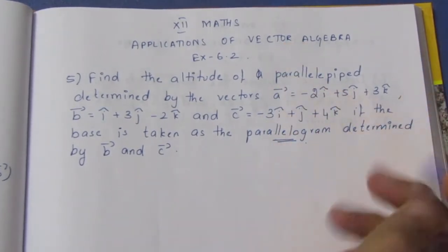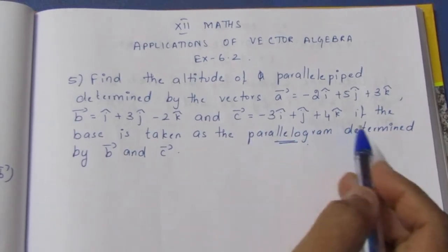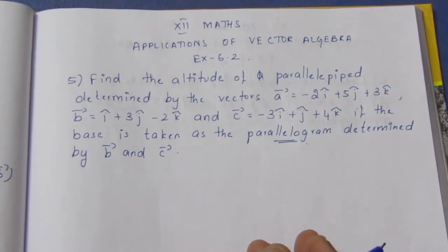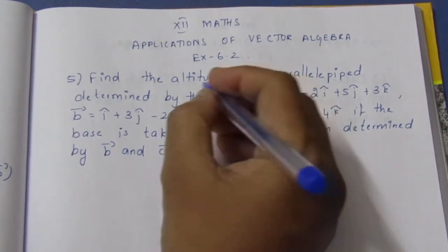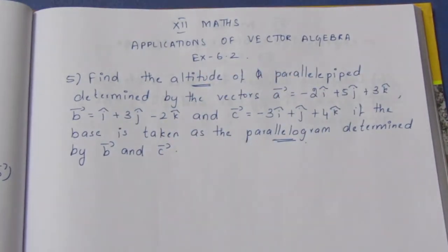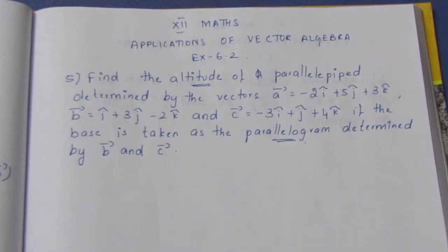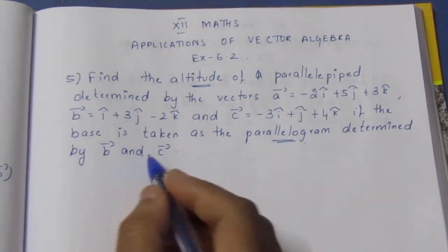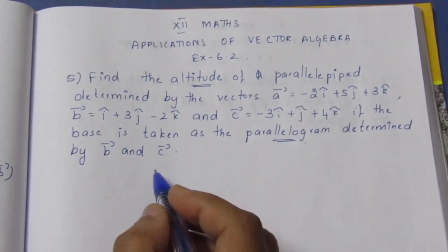The parallelepiped is determined by vectors B and C forming the base parallelogram. We need to find the height. For a parallelepiped, volume equals the scalar triple product, the box bracket [A B C].